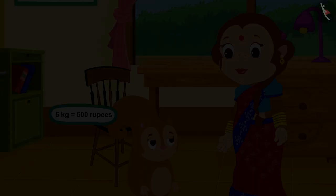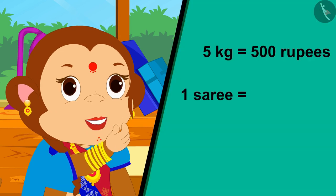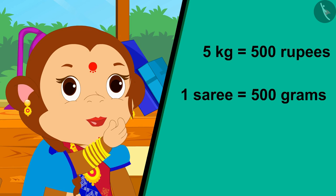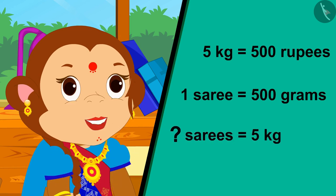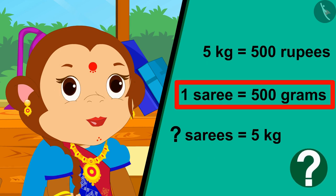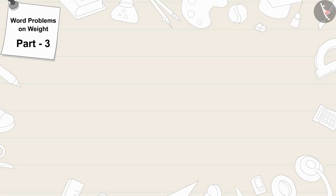Now Banno is thinking: one of my saris weighs 500 grams, so how many saris will I be able to send in a 5 kilogram parcel? Children, can you tell that if a sari of Banno weighs 500 grams, how many saris will she be able to send in a parcel of 5 kilograms?